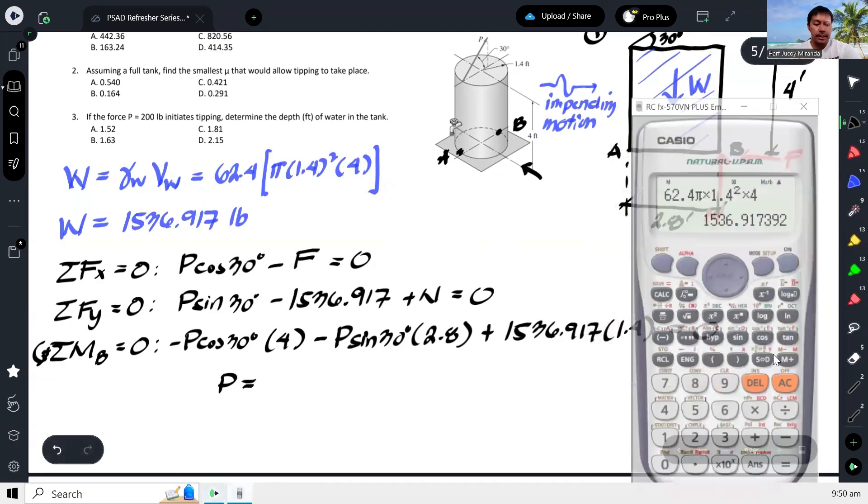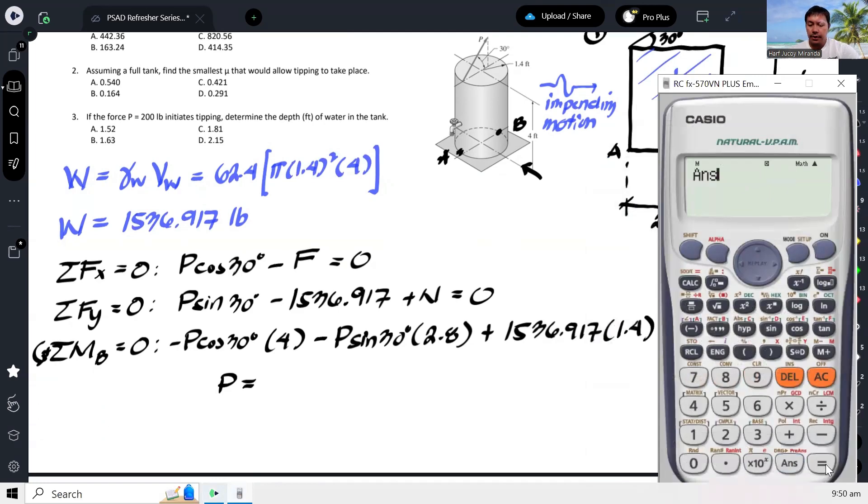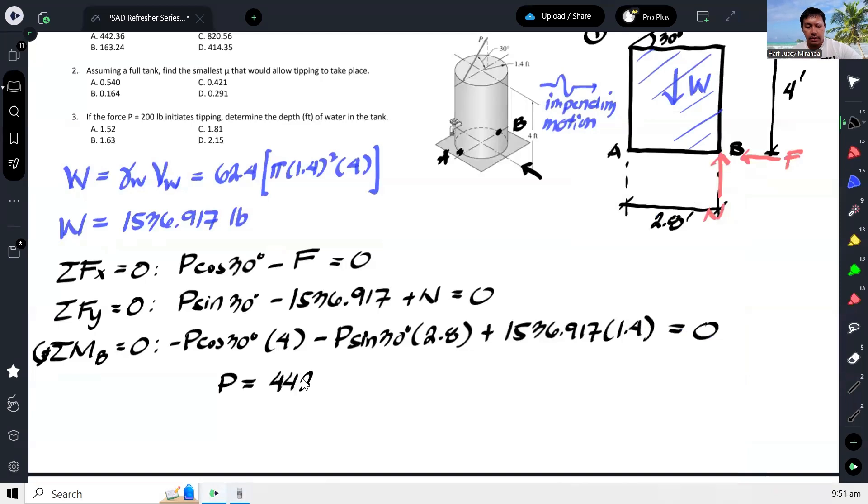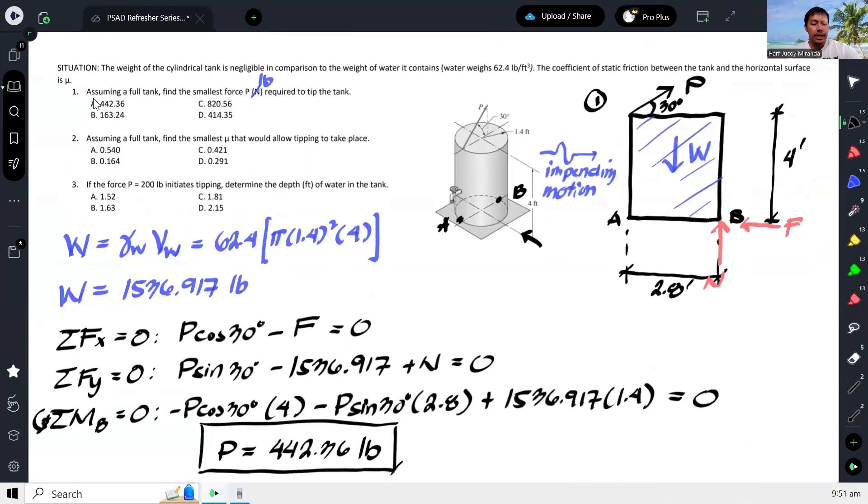So we will have negative P cosine 30 times 4 minus P sine 30 times 2.8 plus yung weight times 1.4 equals zero. And solving for P we will have 442.36, and pounds dapat pounds ito. So this is the force P that will initiate tipping.